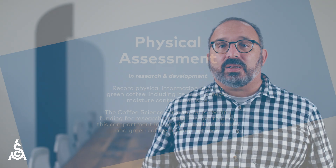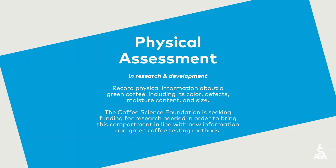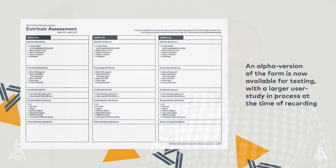Afterwards, we briefly covered the physical assessment, where users will record physical information about a green coffee, including color, defects, moisture content, and size. Finally, we reviewed the extrinsic assessment, which documents informational attributes of a coffee and why we've added this new assessment to the CVA.